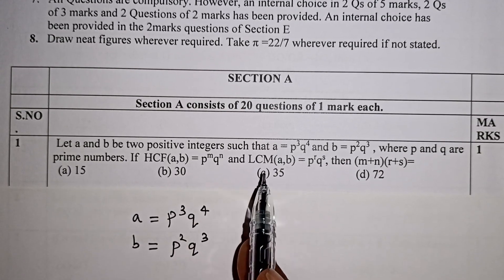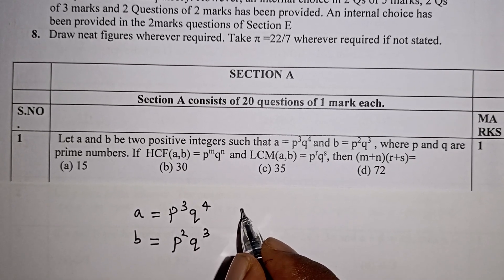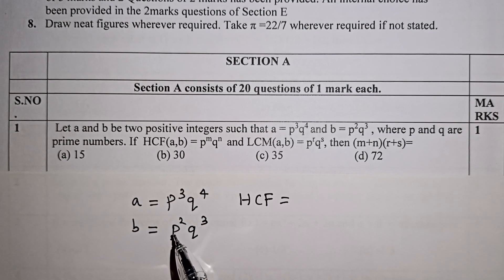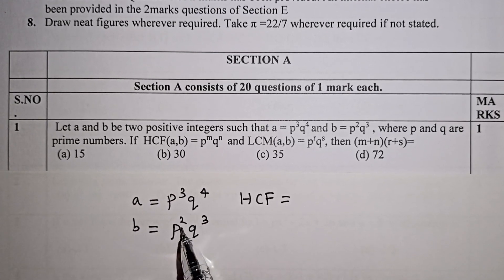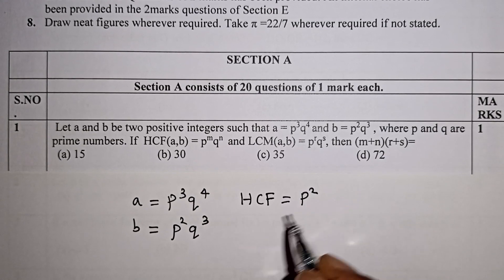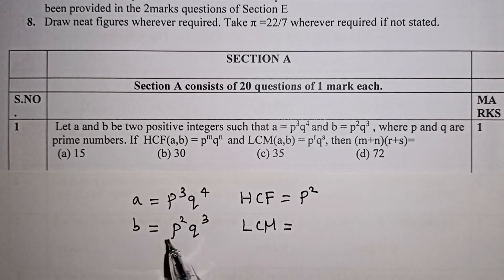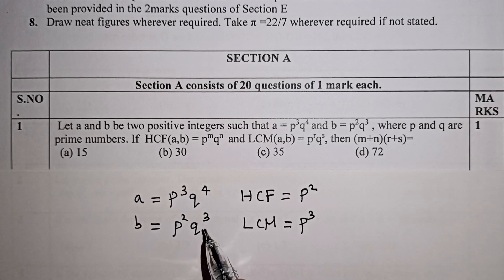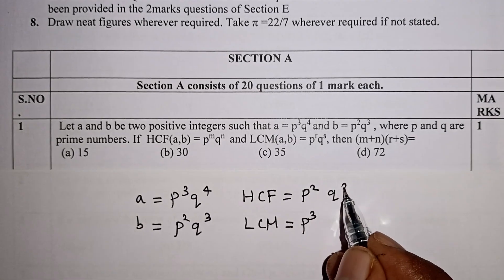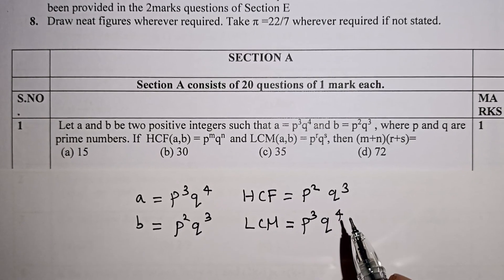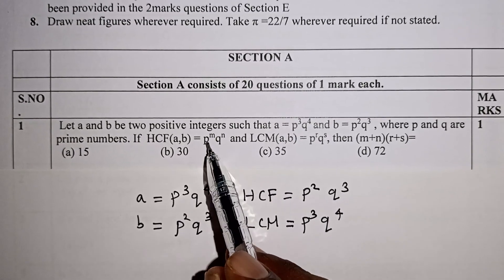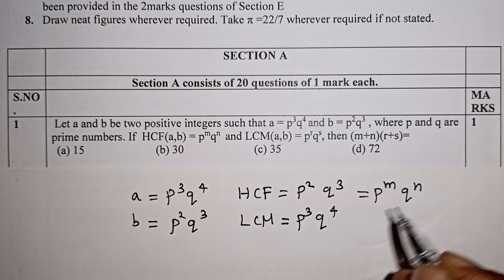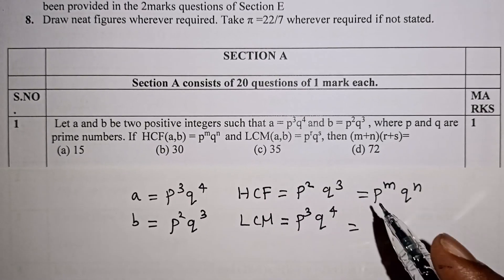Now we will find the LCM and HCF. HCF is very simple — for HCF we take the smaller powers. For P: P³ and P², so HCF takes P². For Q: Q⁴ and Q³, so HCF takes Q³. For LCM, we take the larger powers: P³ and Q⁴. So this question is about LCM and HCF.